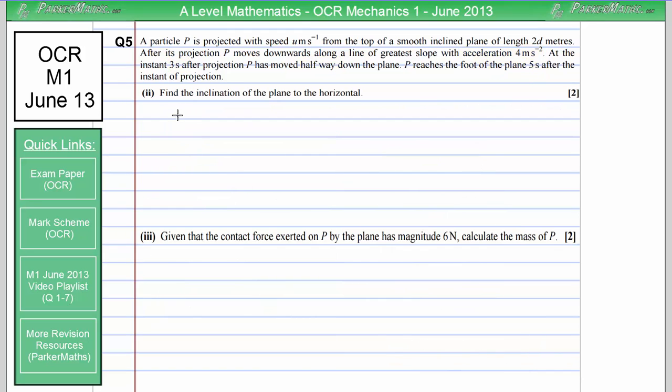In part 2 I need to find the inclination of the plane to the horizontal. The diagram is going to be a bit more important this time. So let's think about the information we know about this plane. We know that it's smooth so there's no friction going to be involved. We know that the acceleration down the slope is 4 meters per second squared.